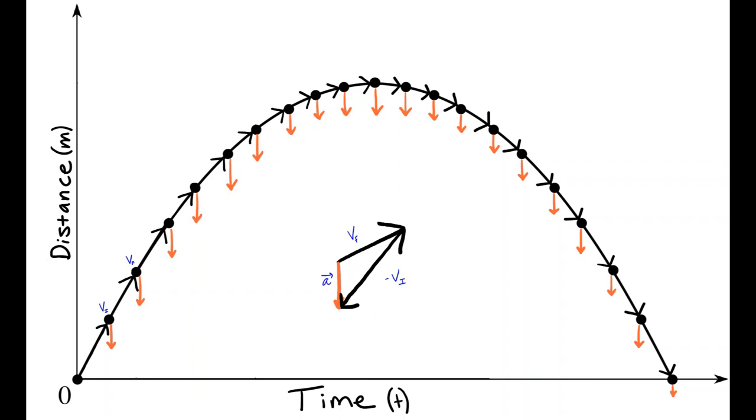Free fall acceleration is shown below as an orange vector pointing down. This is calculated by taking vector final and subtracting vector initial, then drawing a vector that points from the tail end of vector final to the head end of vector initial.